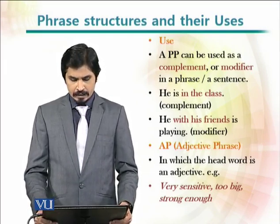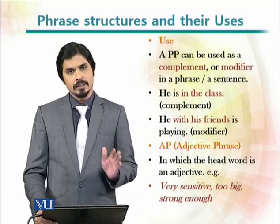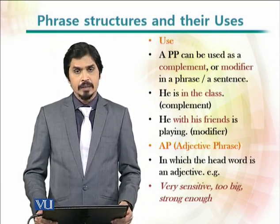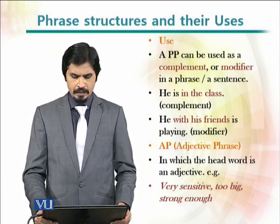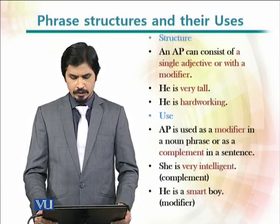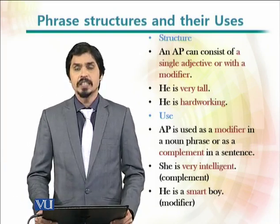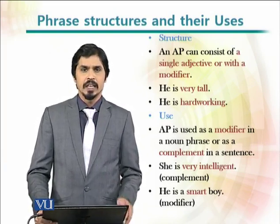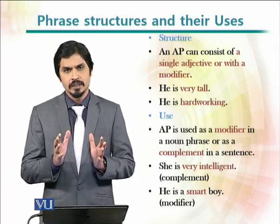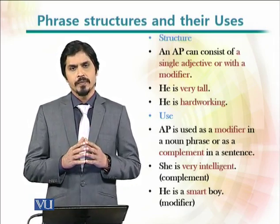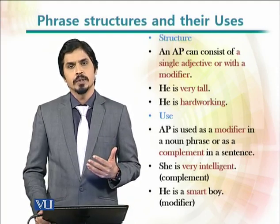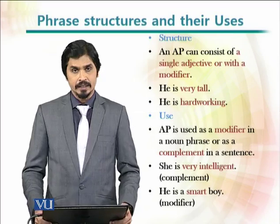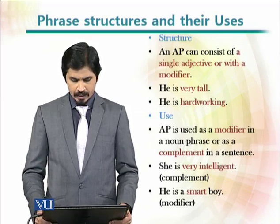Let's move to AP, which is short for adjective phrase. All those phrases where the head word is an adjective are called adjective phrases. Typical examples include 'very sensitive,' 'too big,' 'strong enough.' The structure consists of a single adjective or an adjective with a modifier. For example, 'he is very tall' and 'he is hardworking' — 'hardworking' is a single word making an adjective phrase, whereas 'very tall' is a combination of two words which includes a modifier, making an adjective phrase.